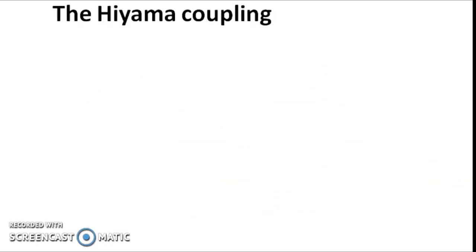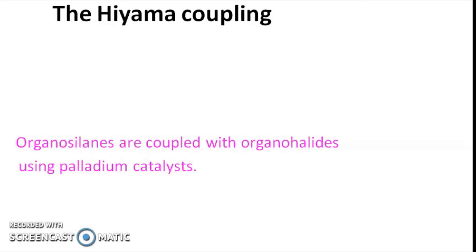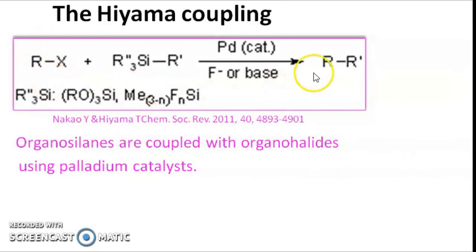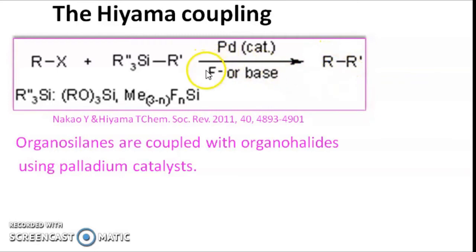Hiyama coupling involves coupling of organosilanes with organohalides using a palladium catalyst. The organometallic compound is an organosilane and the other partner is an organohalide. In this general representation of Hiyama coupling, you have the organohalide, the organosilane, the palladium catalyst, and you get another organic compound. For Hiyama coupling, the presence of fluoride or a base is required.